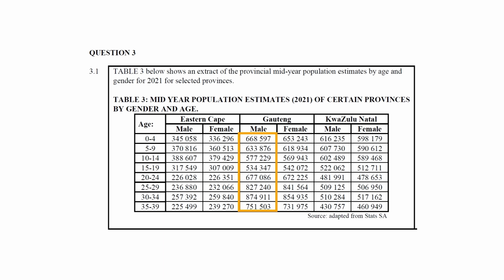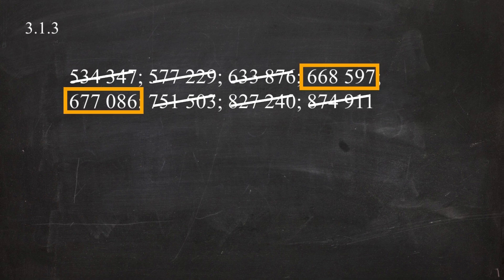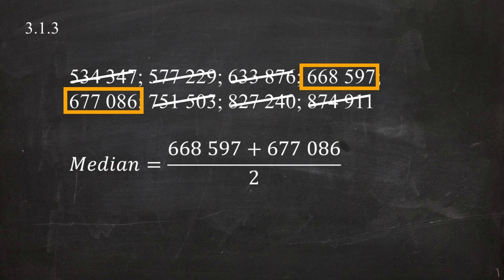The first step in determining the median is to arrange the values in ascending order. Eliminating numbers from both ends of the data set leaves two values in the middle. The median equals the mean of these two values: 668,597 plus 677,086 divided by 2, giving a median of 672,841.5.